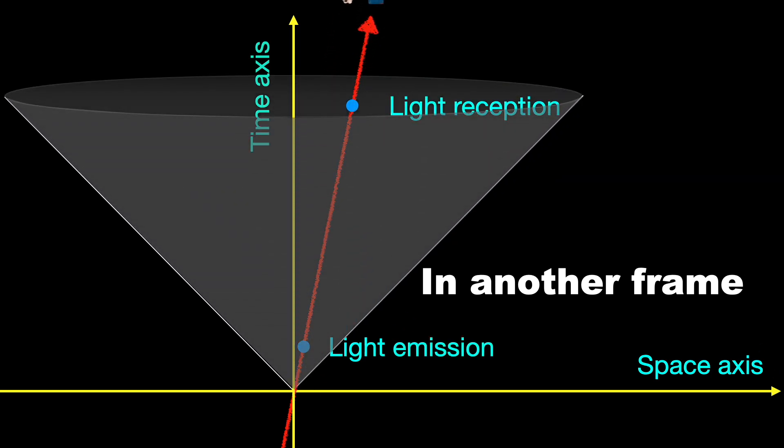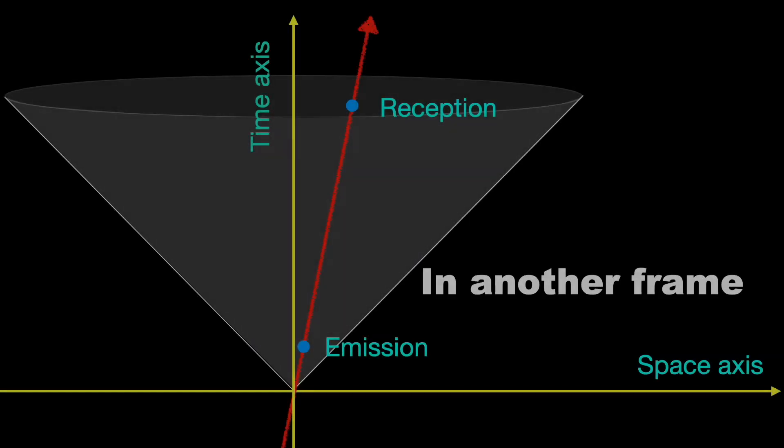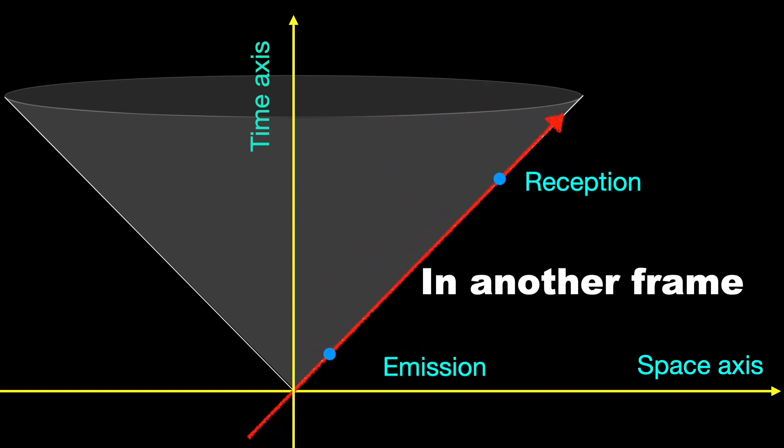So do you see why a photon cannot have its own rest frame? Even if the photon itself could serve as a thinking, living observer, its world line is obviously light-like, not time-like. So any pair of emission-reception events on the photon's world line is always separated by a light-like interval, which is always zero.